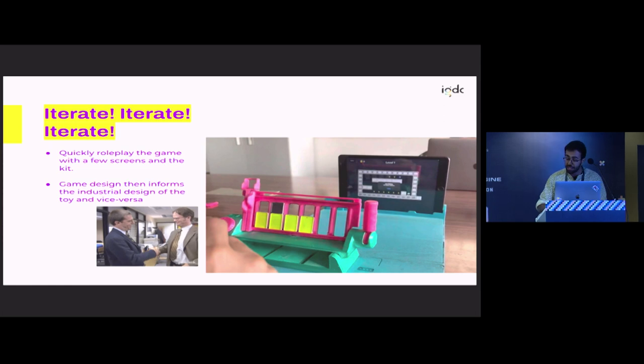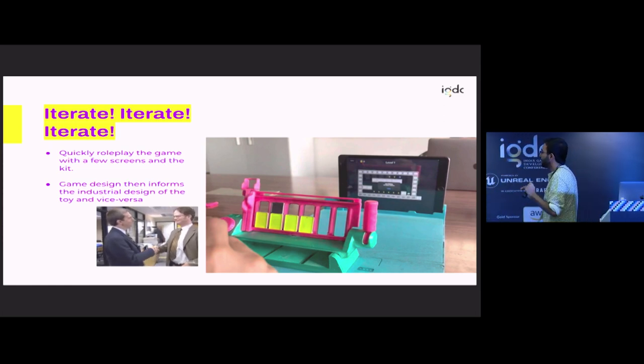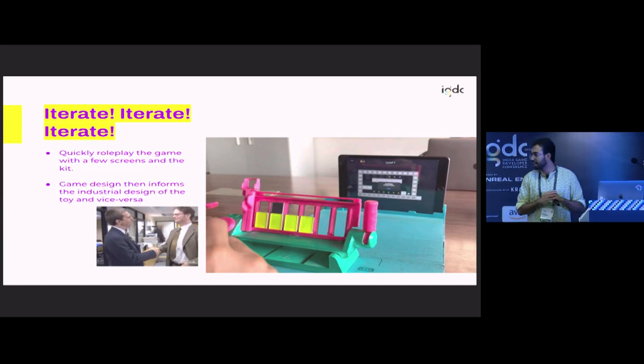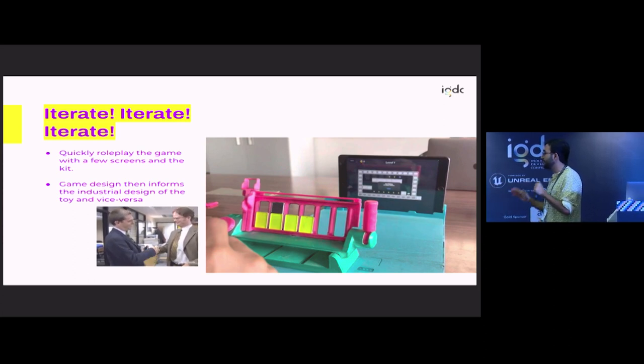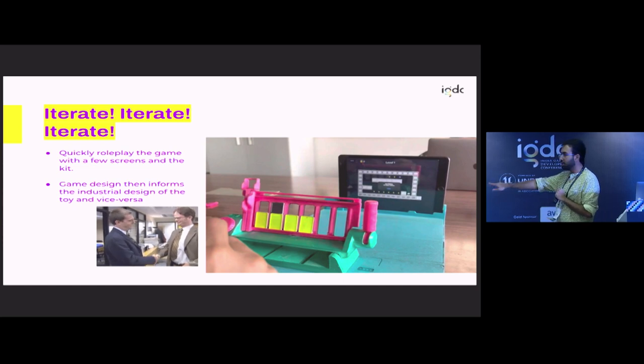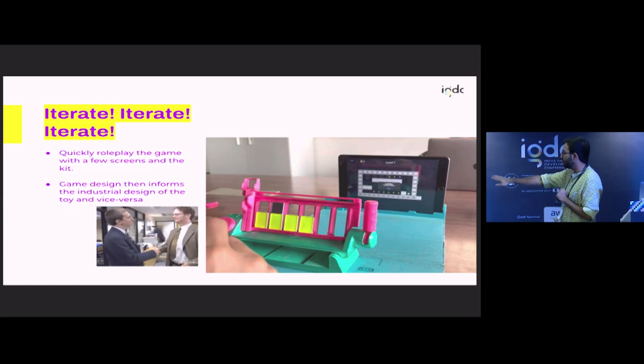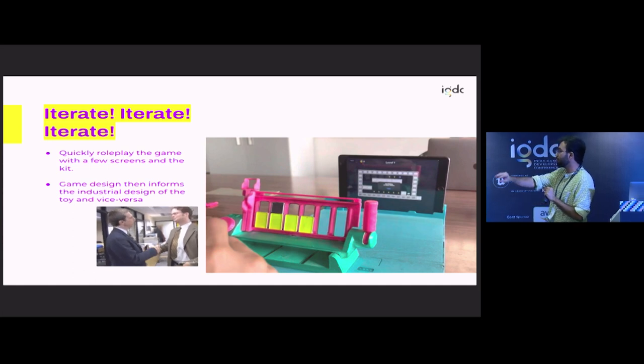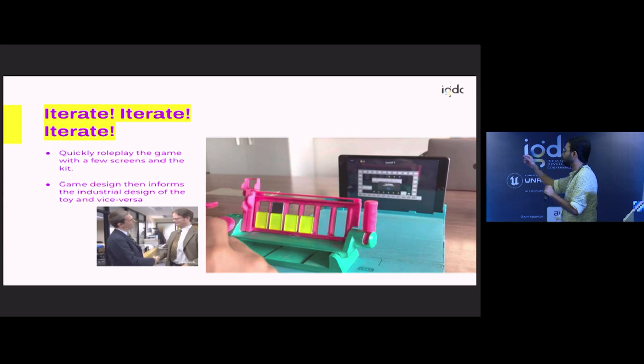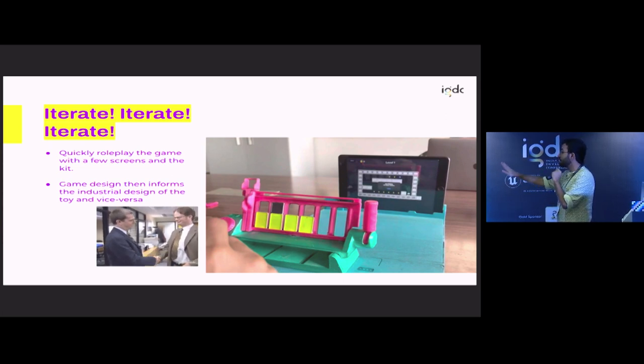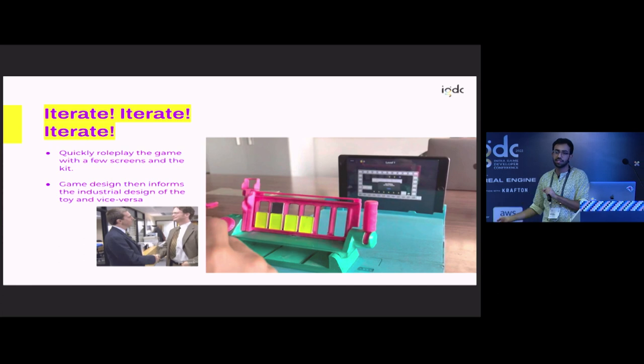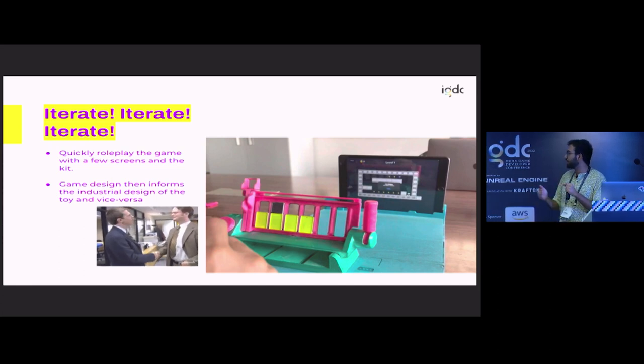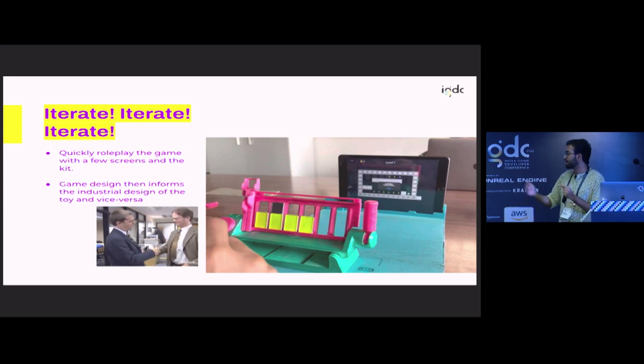What we end up doing once we have our mechanics and once we have decided which playground size we want to go for is we quickly create small screens on Figma or a prototype, whatever gets us to the idea the fastest. We usually 3D print out the kit itself. This is a 3D print out and we're role playing in front of the game. We do it ourselves where we are like, character moves from point A to point B, put this coding tile, put this number, use the loop sliders.